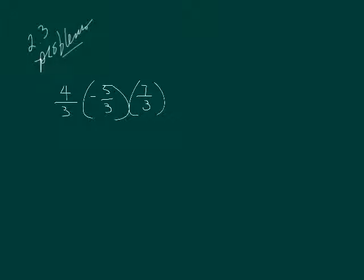What I'm going to do is multiply my numerators and then multiply my denominators. I'm going to multiply, let's do the bottom first. 3 times 3 is 9 times 3 is 27.